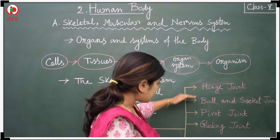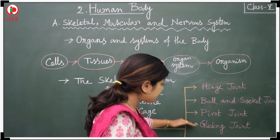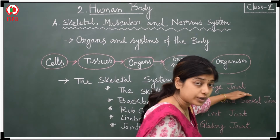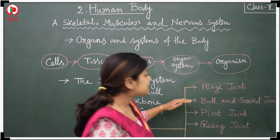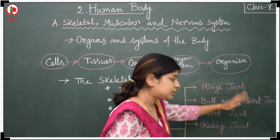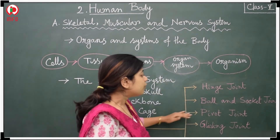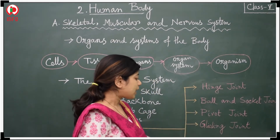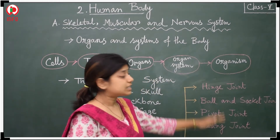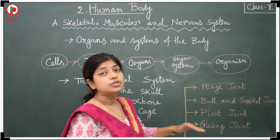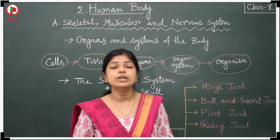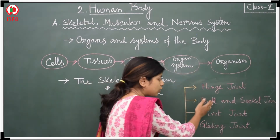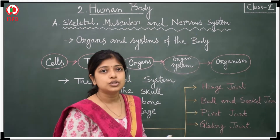Joints are available in different forms. There is the hinge joint, ball and socket joint, pivot joint, gliding joint, and cartilage. These five kinds of joints we will learn. Now let us go to the first one: the hinge joint.